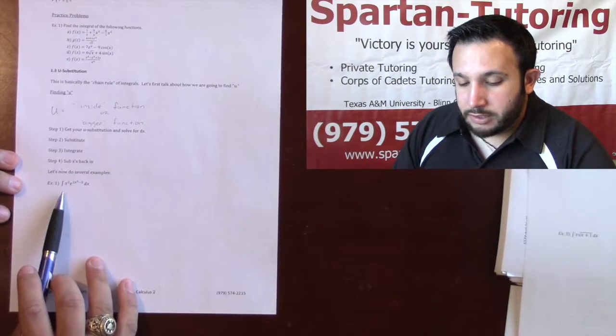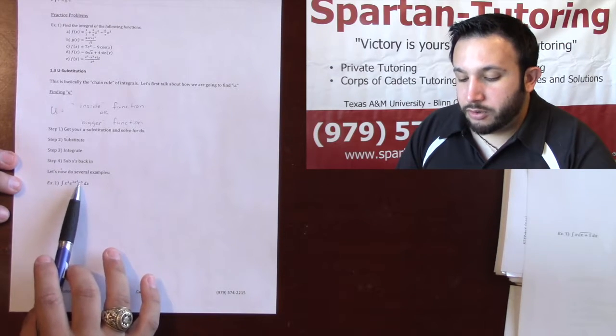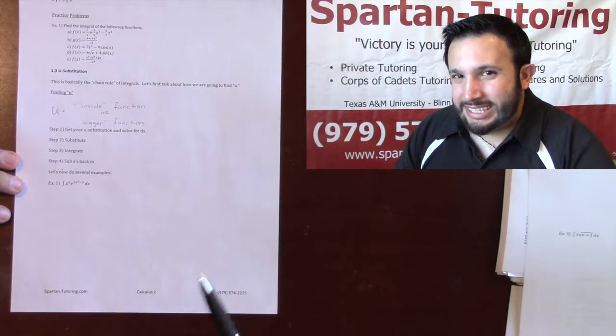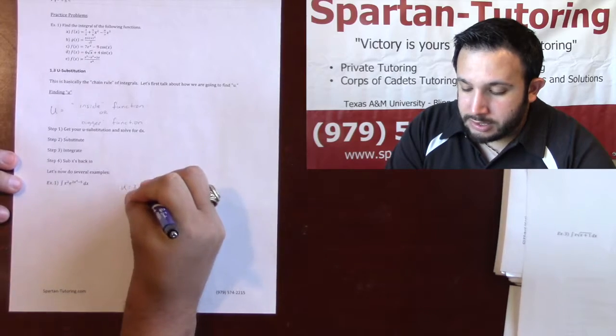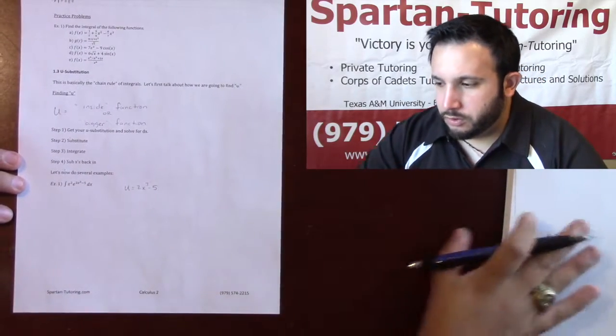Take a look at this first integral. I have the integral of x squared, e to the 2x cubed minus 5. Notice how this 2x cubed minus 5 is inside of that e, so I'm going to set u equal to 2x cubed minus 5. Let's do a couple more just to make sure we have u, then we'll do the full problem.